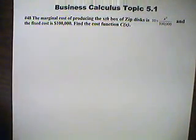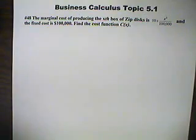This is Calculus, Topic 5.1, number 48. The marginal cost of producing the xth box of Zip disks is represented by 10 plus x squared over 100,000 dollars, and the fixed cost is $100,000.